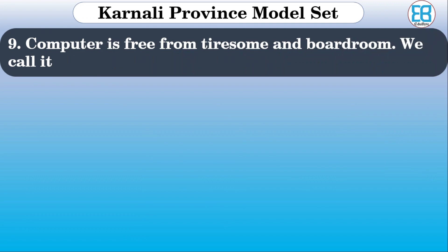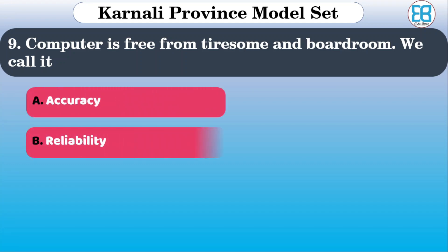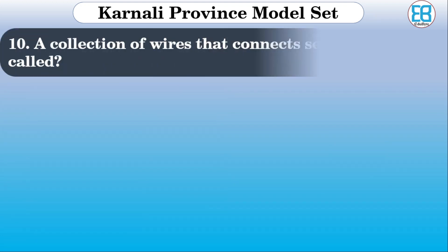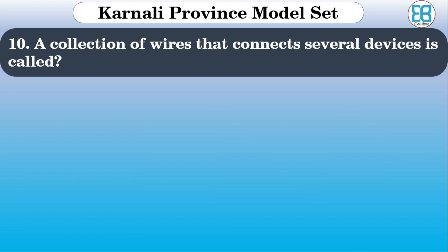A computer is free from tiredness and boredom — we can use it any time we want. The options are: accuracy, reliability, diligence, versatility. The correct option is diligence.